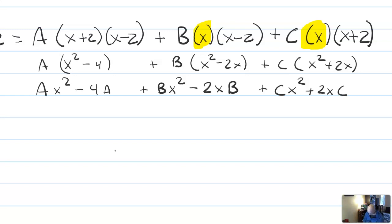that that's ax squared minus 4a plus bx squared minus 2xb plus cx squared plus 2xc. Now let's group all the terms by degrees. So I've got some x squared terms, I've got some x terms, and I've got some constant terms. Notice that that 4a is actually a constant term just because it doesn't have any x.